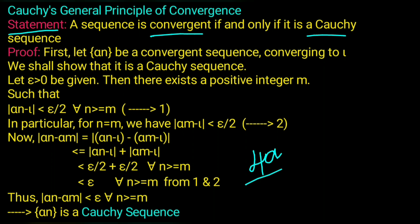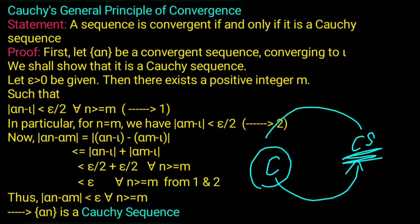First, there are two sequences: one is convergent and one is Cauchy. Here you can see the statement: a sequence is convergent if and only if it is a Cauchy sequence. The meaning of this is Cauchy sequence and convergent sequence are related.